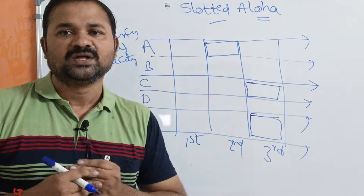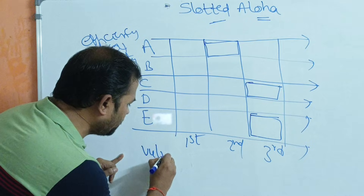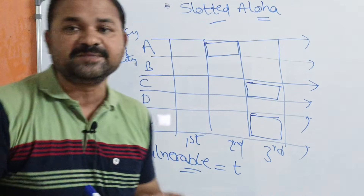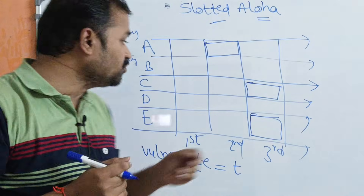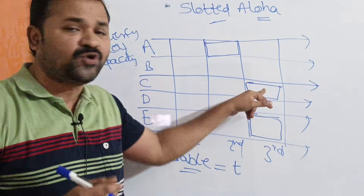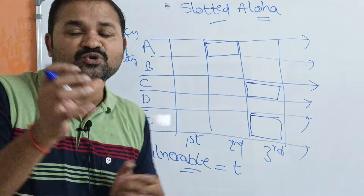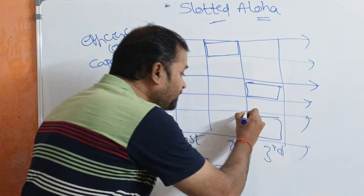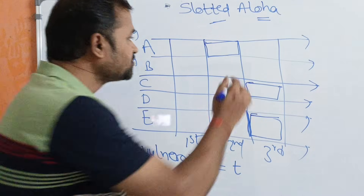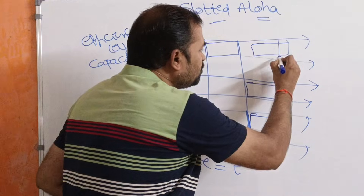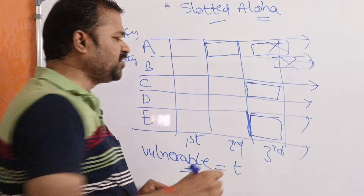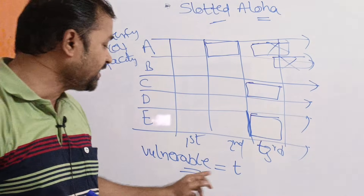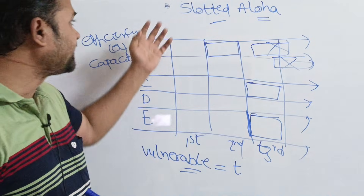Now let us see about vulnerable time. The formula for vulnerable time in slotted ALOHA is T, where T is the transmission time for one frame. Because the user can only transmit at the beginning of the next slot, only one slot is needed. The user cannot transmit in the middle or at the end of a slot, so the vulnerable time is simply T.